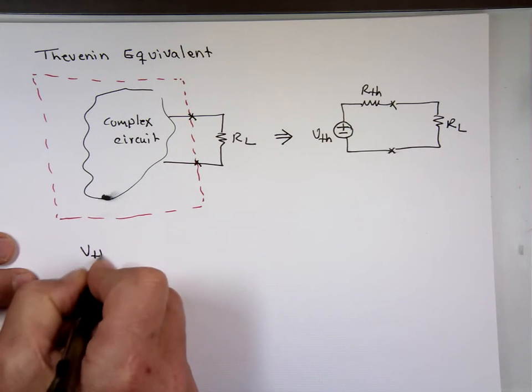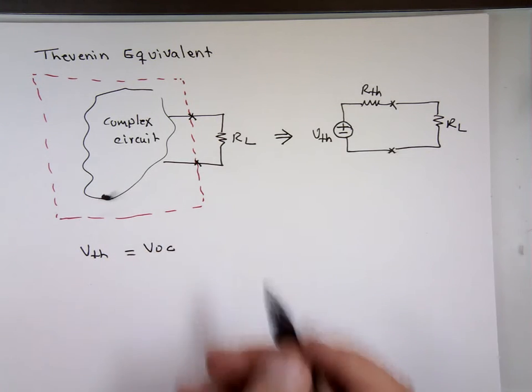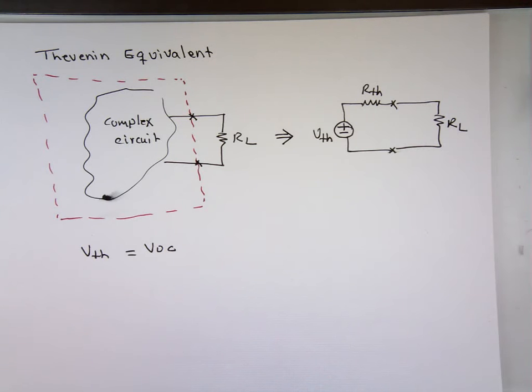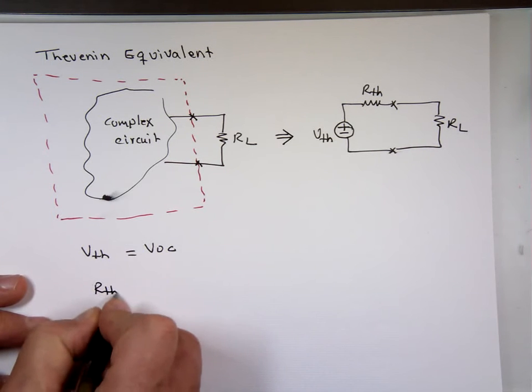V-Thevenin can be found by finding the V open circuit. When we cut the circuit, and this is gone, this is going to be open. What is the voltage right here? That's your V-Thevenin.